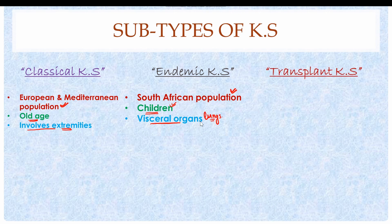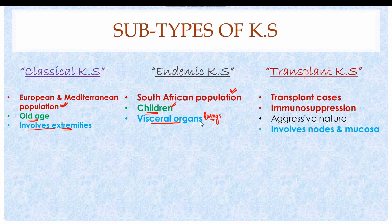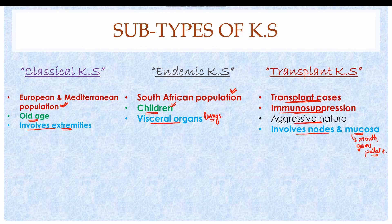The third is the transplant-associated, or iatrogenic, Kaposi Sarcoma. It occurs in transplant cases where patients are placed on immunosuppressive therapy, making it very aggressive compared to the others. It involves lymph nodes and mucosal membranes such as inside the mouth, gums, and soft and hard palate. Attenuation or omission of immunosuppressive therapy minimizes the disease, but increases the risk of transplant rejection.